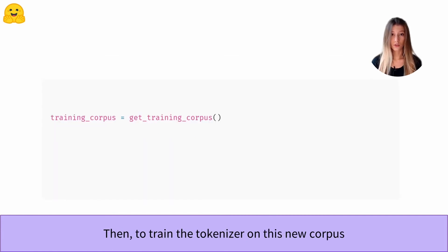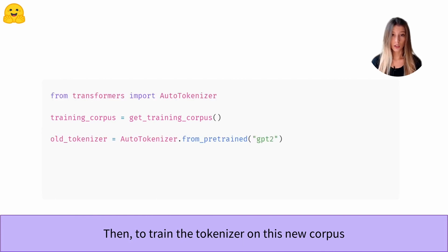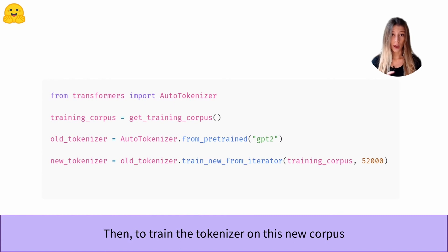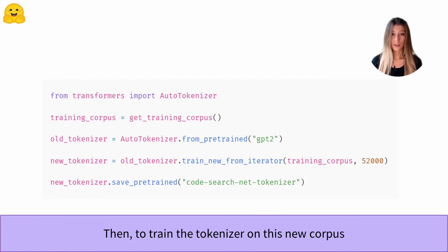Now that we have an iterator over our Python function corpus, we can load the GPT-2 tokenizer architecture. At this point, the tokenizer is not adapted to our corpus, but we only need one more line to train it on our new corpus. An argument common to most tokenization algorithms is the vocabulary size — we choose here the value of 52,000. Finally, once training is finished, we save our new tokenizer locally or send it to the Hub to be able to reuse it easily afterwards.